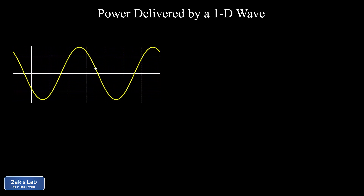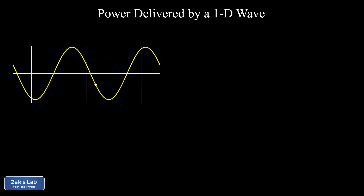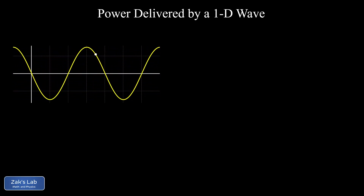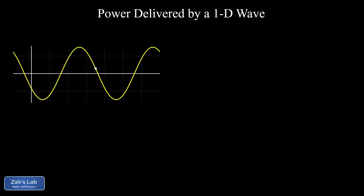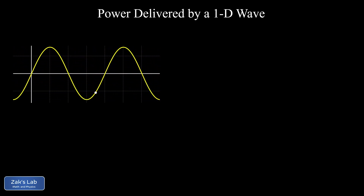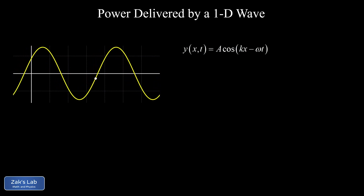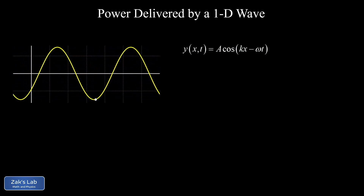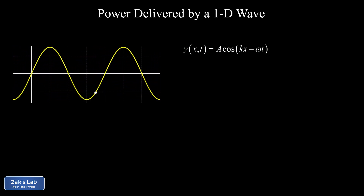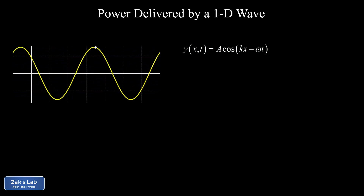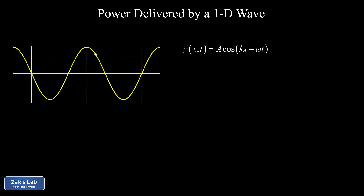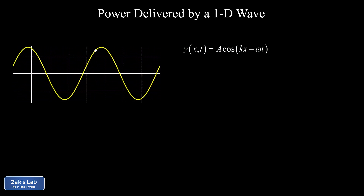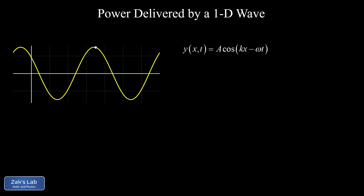This video is part of a short sequence on the fundamentals of one-dimensional waves. To quickly review previous results: in the first video, we derived the mathematical form of a moving wave on a string — y of x and t — because at any given position along the string, you're going to have a point moving up and down with sinusoidal time dependence. Every point along the string is out of phase, so we need a function of both position and time.